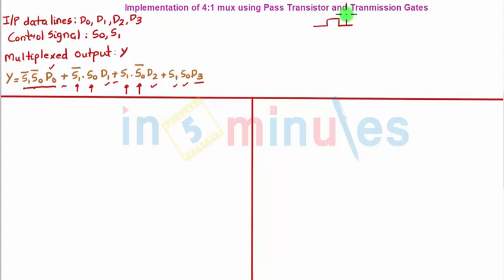We are using NMOS as pass transistors, so we can straight away implement this. This NMOS has an input as S1̄, and AND means series, so put another NMOS in series with S0̄, and this is nothing but my input D0, and this is nothing but my output Y, which we'll label at the end.